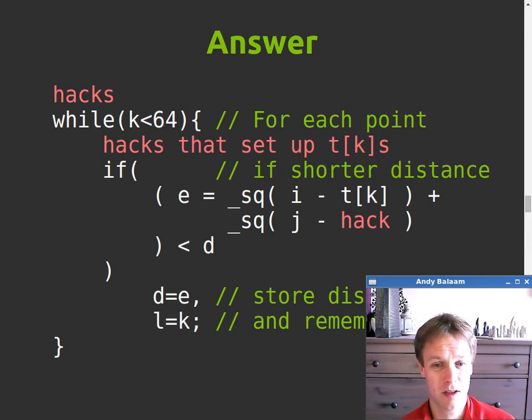And that gives us the square of the distance to the to this particular site. We're looping through all the sites. This is the distance from i and j, which is our pixel we're trying to work out, to the kth site. Actually, it's the square of the distance. We won't bother square rooting it. It'll work out the same. If your square is bigger your square roots bigger. So we don't need to bother with that.